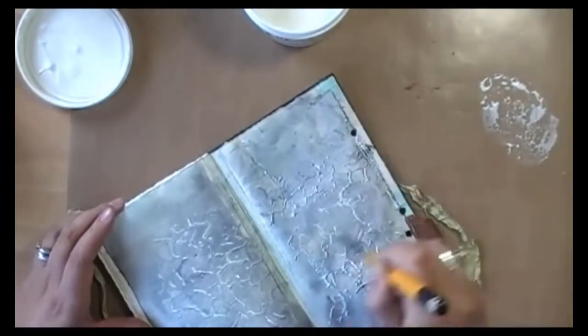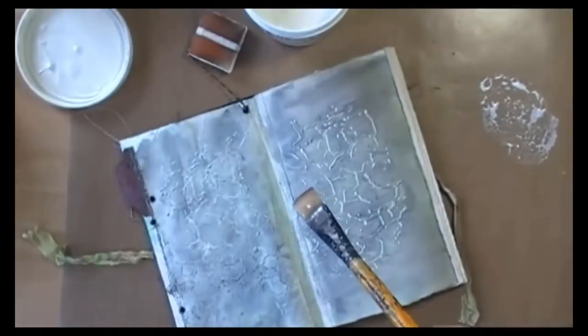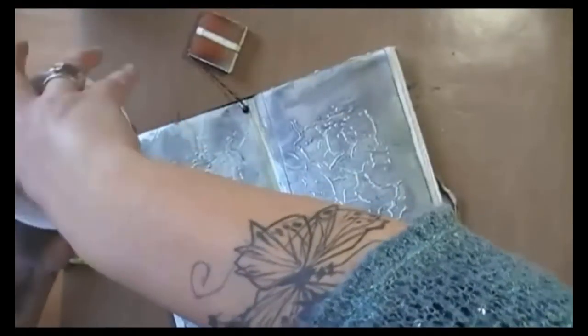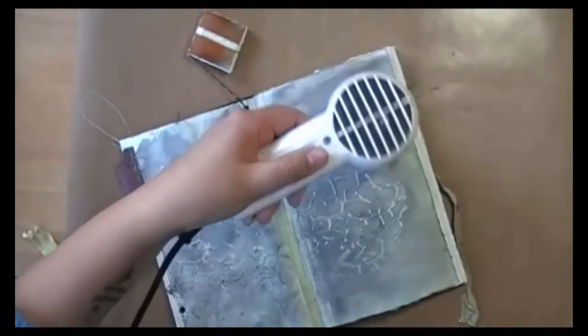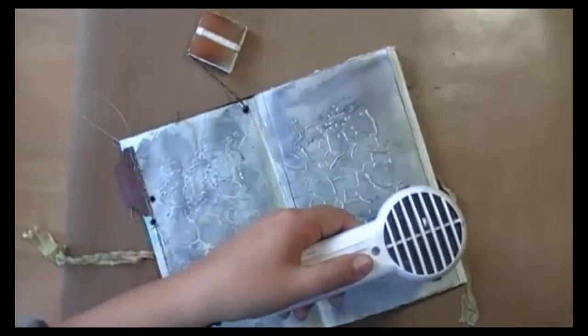And as the silks and Radiant Rain are acrylic based, they won't blend with the gesso, so they are permanent. And then again, quickly drying it.